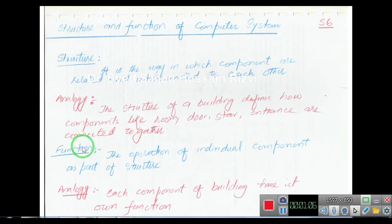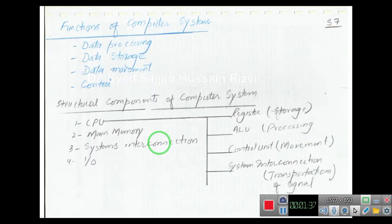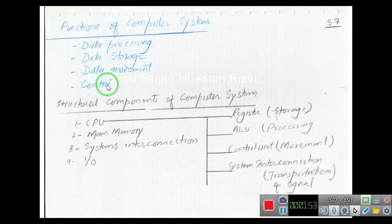The next concept is function. The function is the operation of a specific component as a part of a structure. For example, in a building, each component has its own individual function. Similarly, the functions of a computer system's components include: data processing, data storage, data movement, and data control. These are the set of functions that are supposed to be executed and deployed on a computer system.